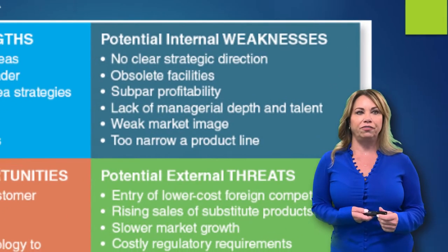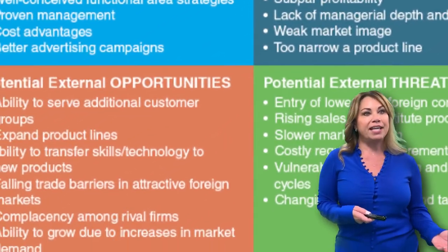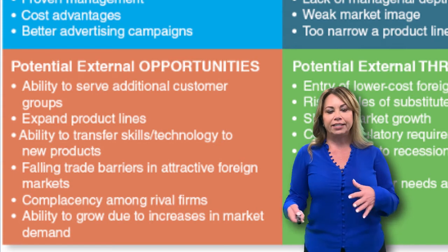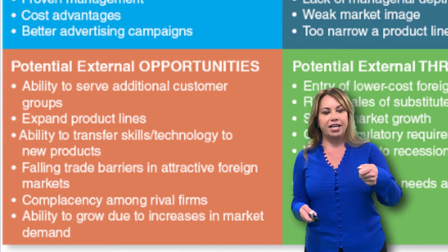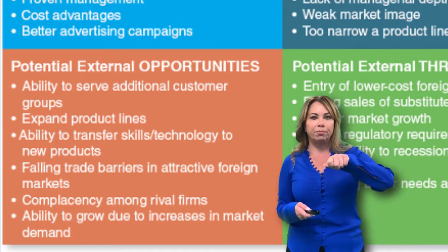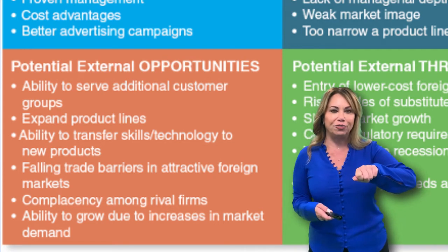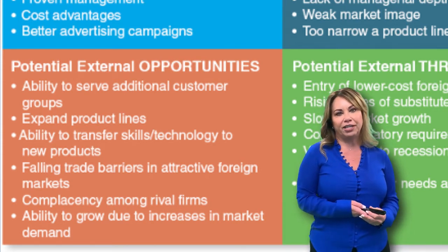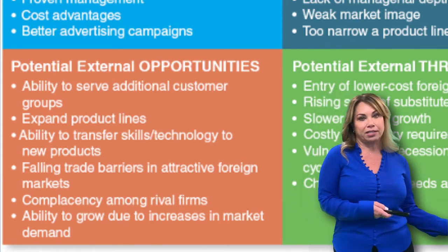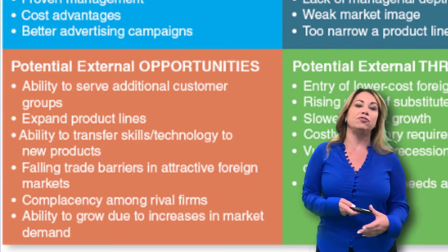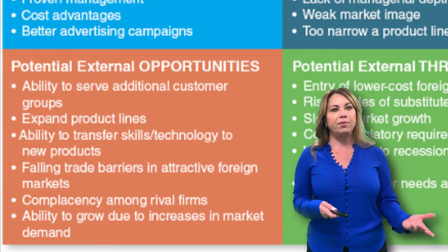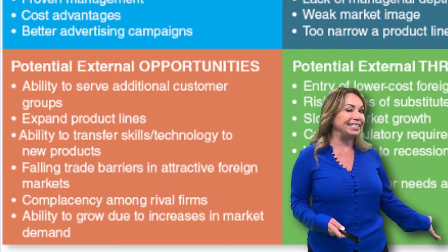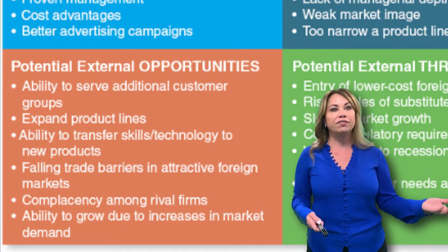Now let's shift gears to those external factors and take a look at what potential opportunities we could have. Maybe that has to do with our customer groups — sometimes we can take the same product and market it towards a different customer group. Recently on Shark Tank, I saw a company that had developed a scoop for protein drinks to pour into your water bottle, and they came up with a new target group of baby bottles. That's an example of a new opportunity as far as our customer base. Maybe we could expand our product lines — the Apple Watch is an example of a new product line for Apple. Also, maybe we have opportunities in international markets as trade barriers fall, or rival firms that are complacent or getting stagnant.